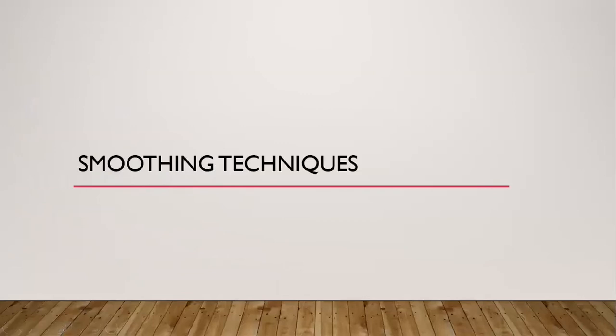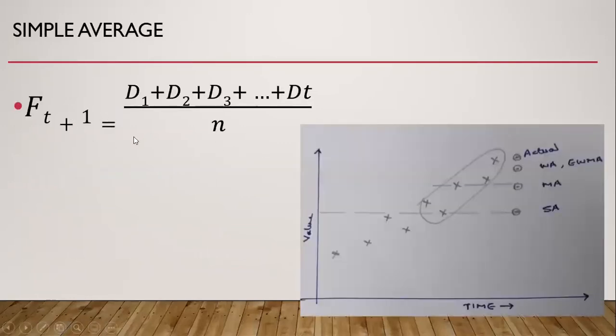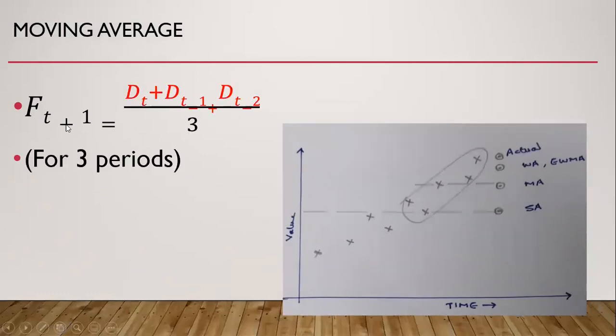Let us see the theory behind smoothing techniques. One is simple average. If these are the data points, we calculate average of all these data points, and it is somewhere in between. So this simple average is the forecast. Then we have moving average. In moving average, we consider only the recent data points. Let's say in this example we consider five recent data points, we take average of these five points, and this is the average. So this is the forecast of moving average.